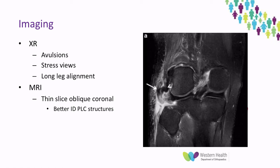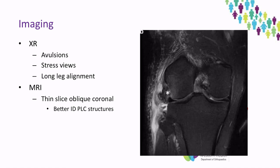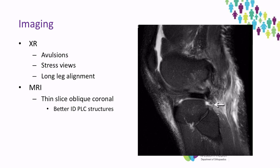Looking at the MRI, many authors indicate using a synthetic oblique coronal view, which better identifies the posterolateral corner structures. Here we have an arrow showing a biceps avulsion, as well as an arrowhead showing a lateral collateral avulsion, an asterisk indicating a tear of the popliteal tendon, and an arrow sign indicating damage to the popliteal fibular ligament.